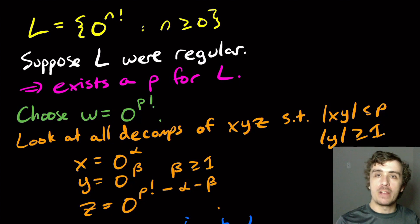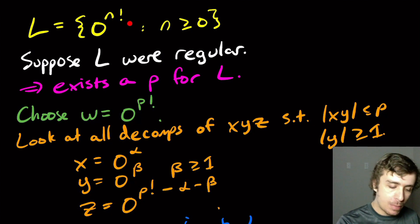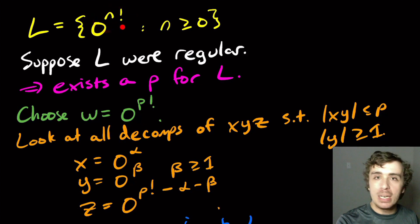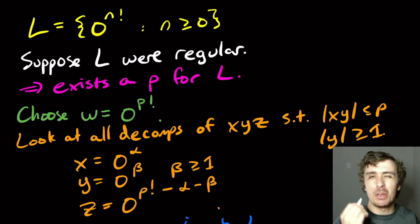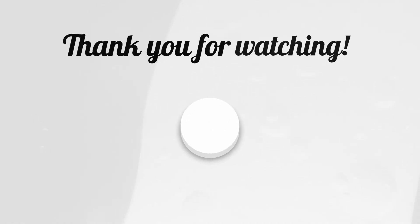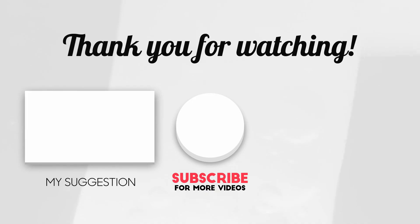It's very similar to perfect powers of two and perfect squares. And try to see if you can generalize this to some arbitrary function up here. What has to be true about this function in order for it to be not regular? It turns out to be a very nice answer. So this language is not regular.